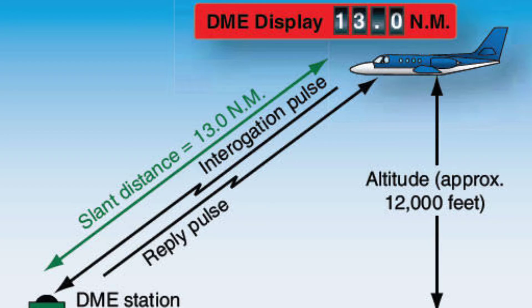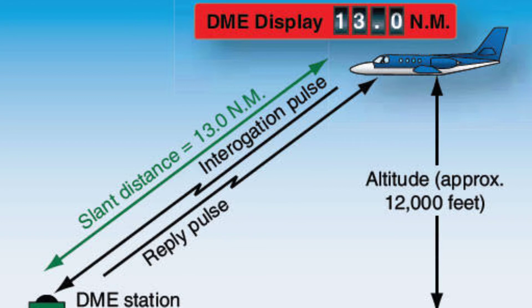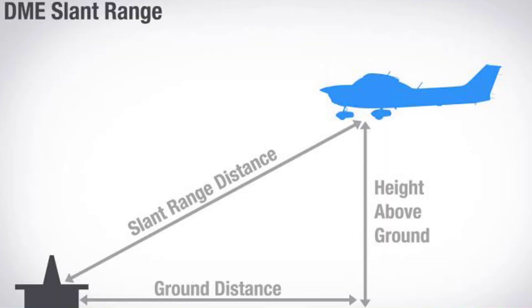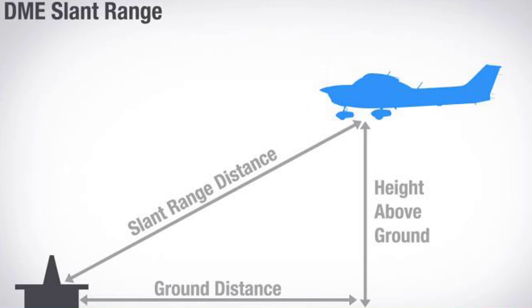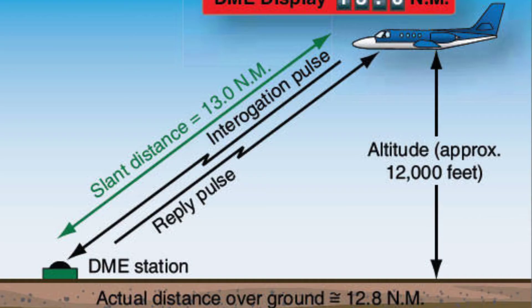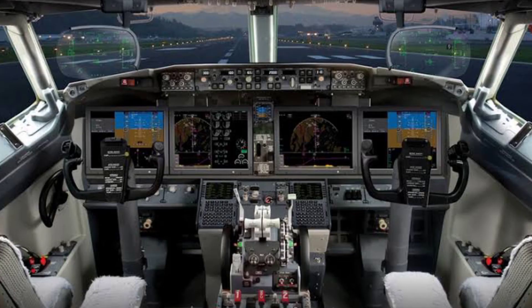A traditional DME displays the distance from the DME transmitter antenna to the aircraft. This is called slant distance. It is very accurate. The DME displays the distance from the aircraft to the DME station, not the distance from the aircraft to the ground. However, some modern DME systems are equipped to calculate the ground distance from the aircraft and display it on the DME display, EHSI, EADI, or EFIS.